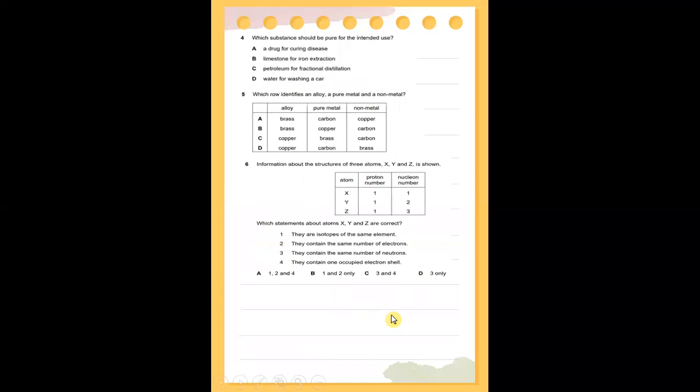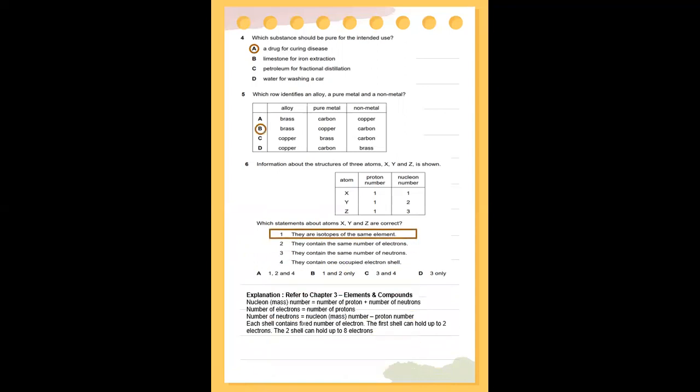Number four: which substance should be pure for its intended use? The answer should be a drug for curing disease. And which row identifies an alloy, a pure metal, and a non-metal? The answer should be B, which is brass, copper, and carbon.